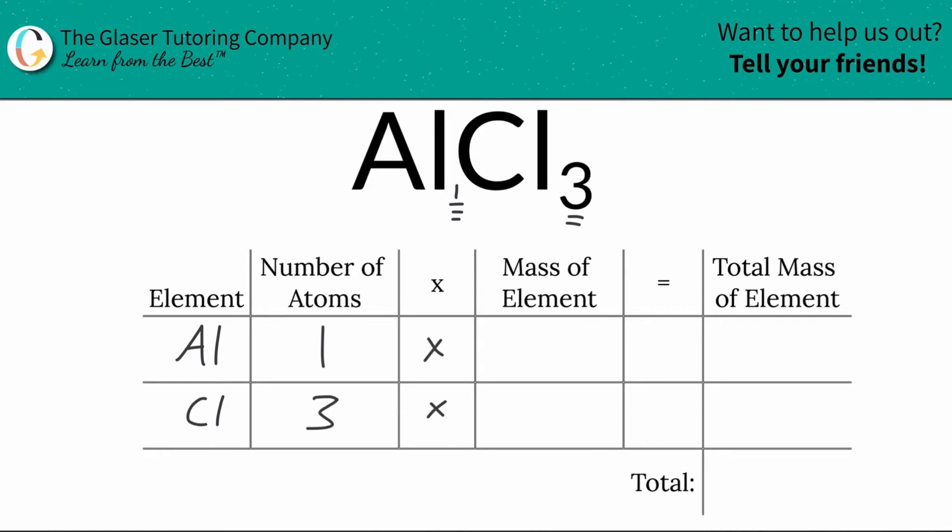Next thing is I'm going to multiply those values by the mass of each particular element. And these masses are found on the periodic table. Let's check it out.